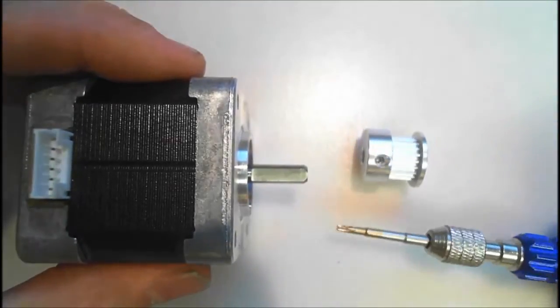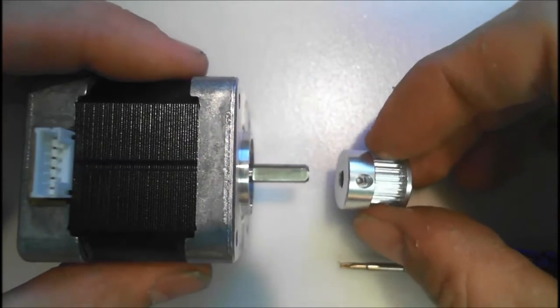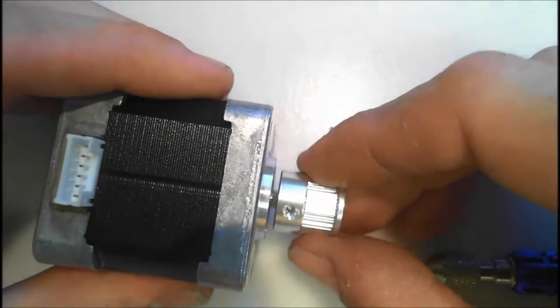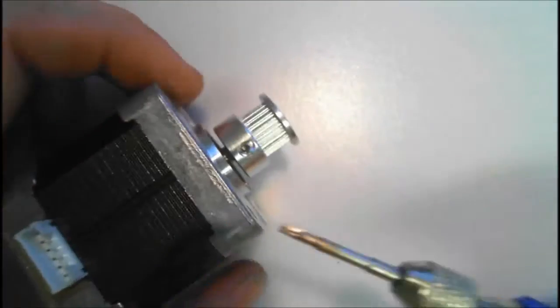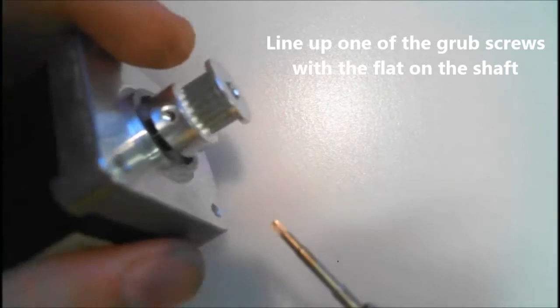We've also got a little Torx bit for the little grub screw that's in there. So we're just going to slide that on and do up the two grub screws. Make sure you line it up with the slot that we cut.